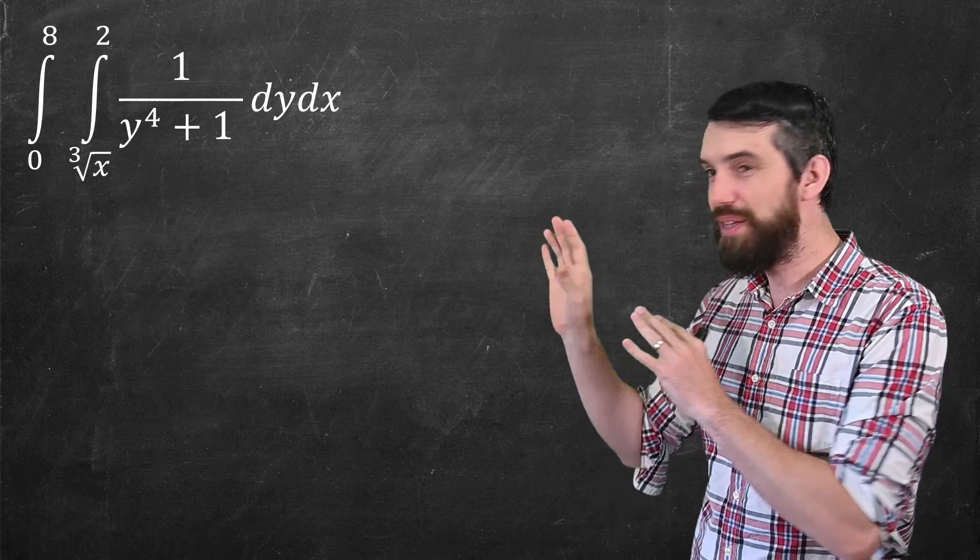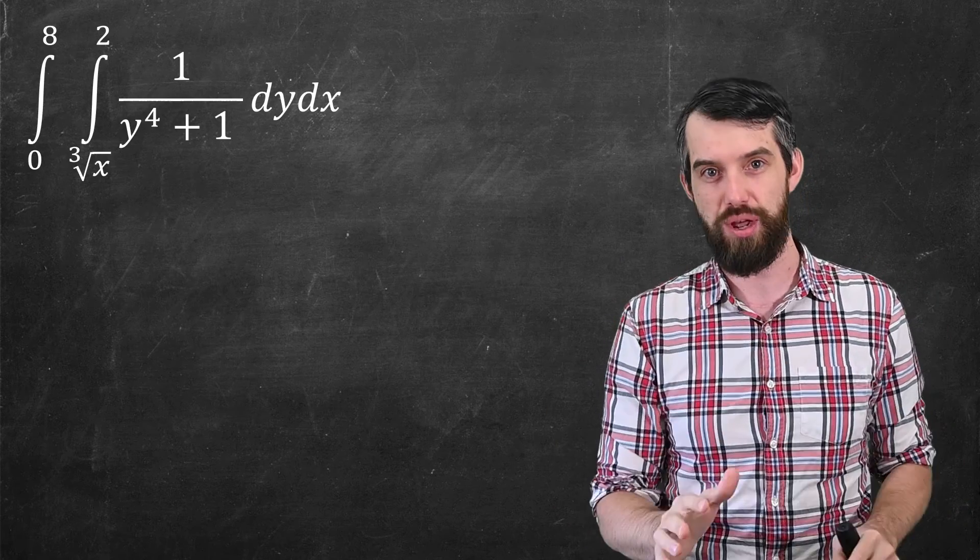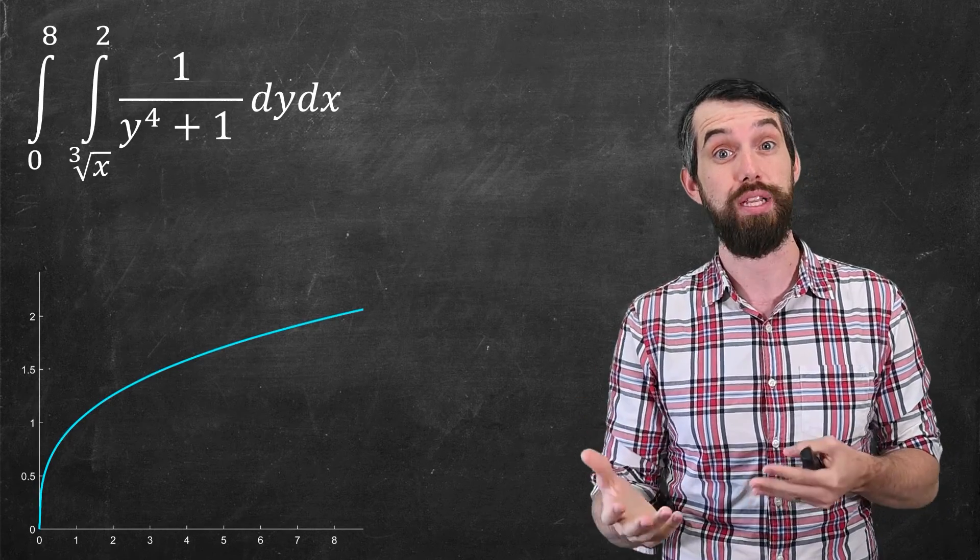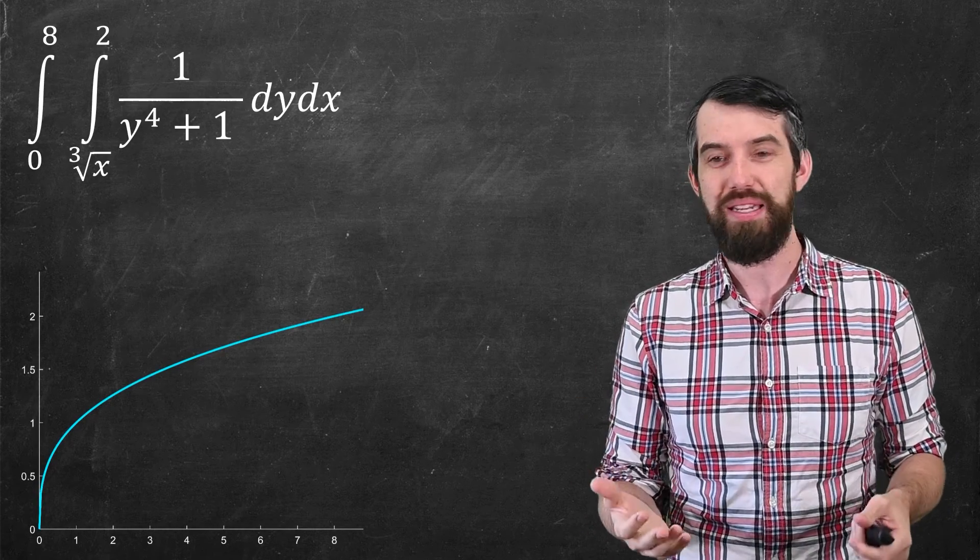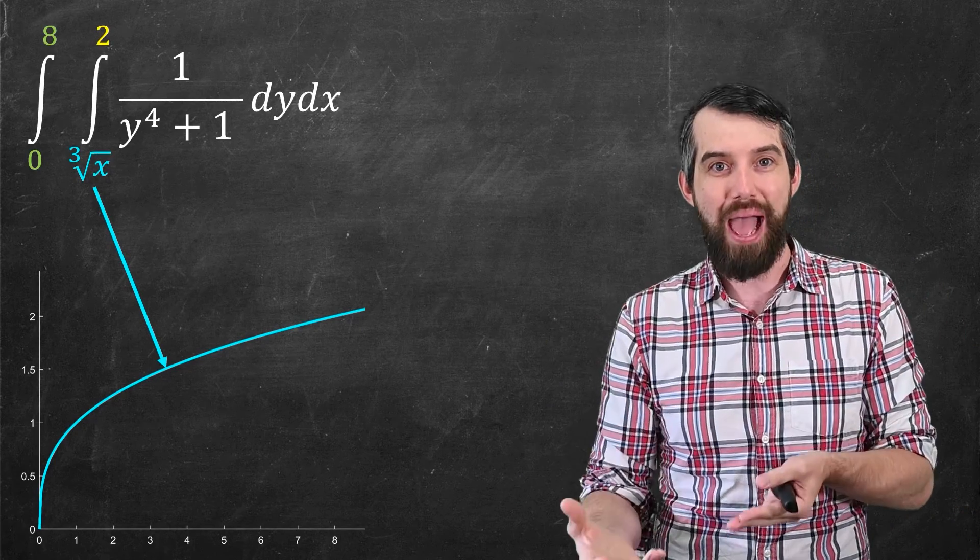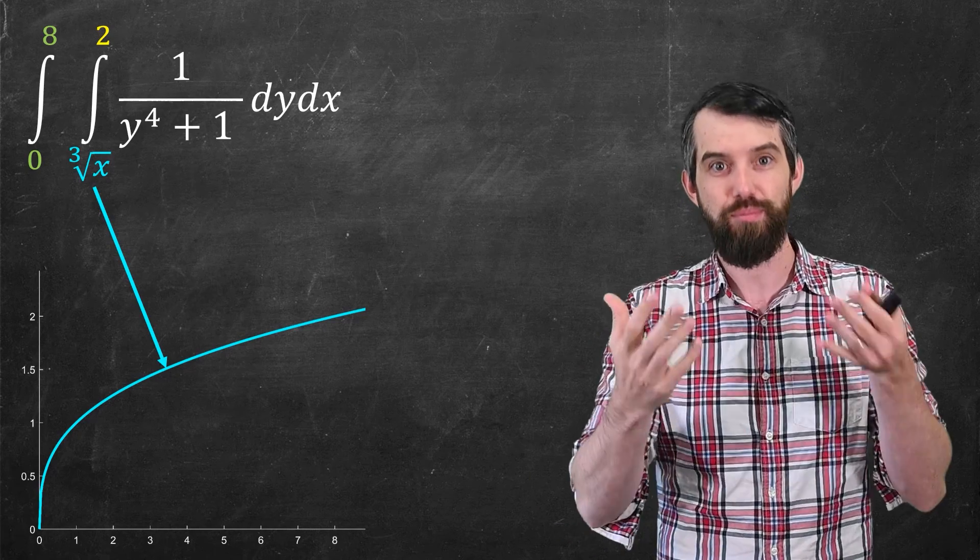So looking at these limits of integration, the most interesting part is the cube root of x. Everything else is just a constant. So I'm just going to try and plot the cube root of x. It looks like this. And I sort of think that that means I've got some correspondence here between the lower bound in my integral respect to y, the function y equal to cube root of x. And I'll put that on the graph.